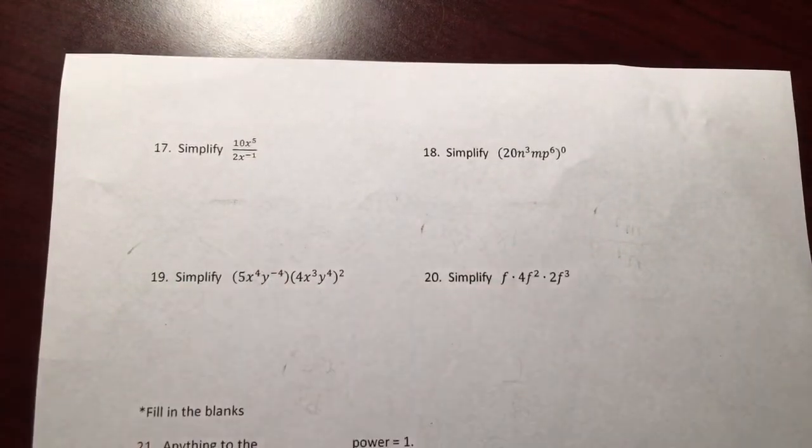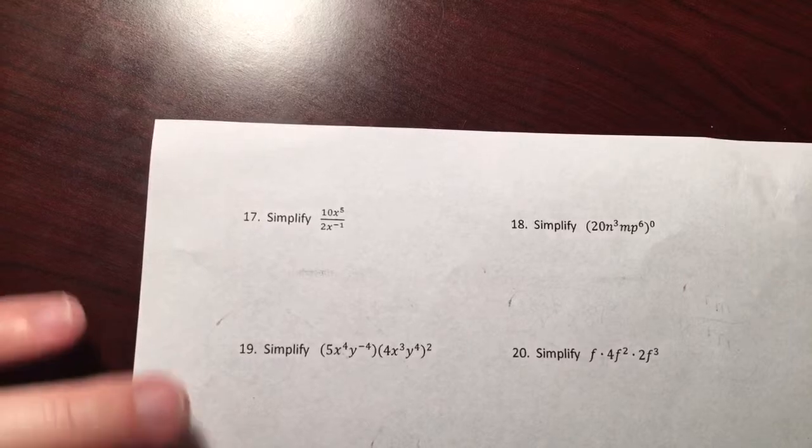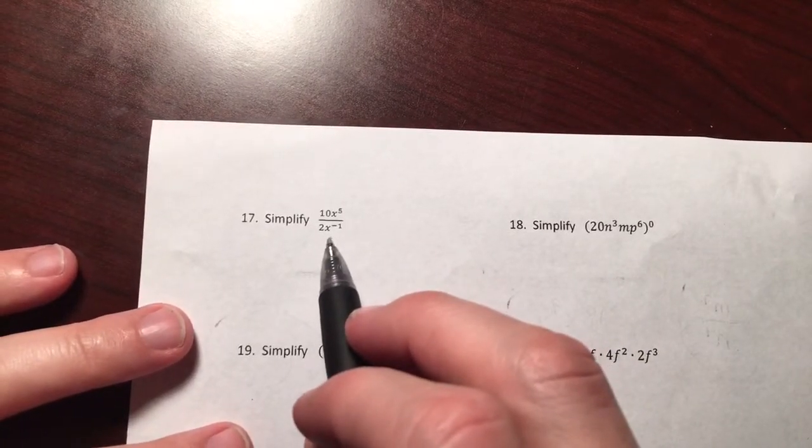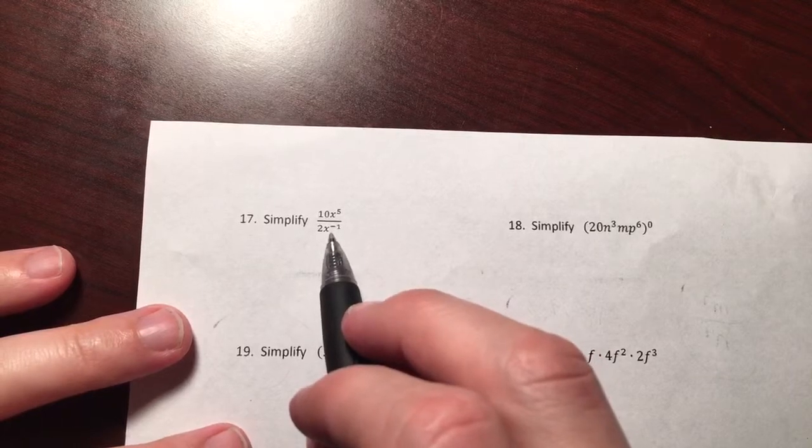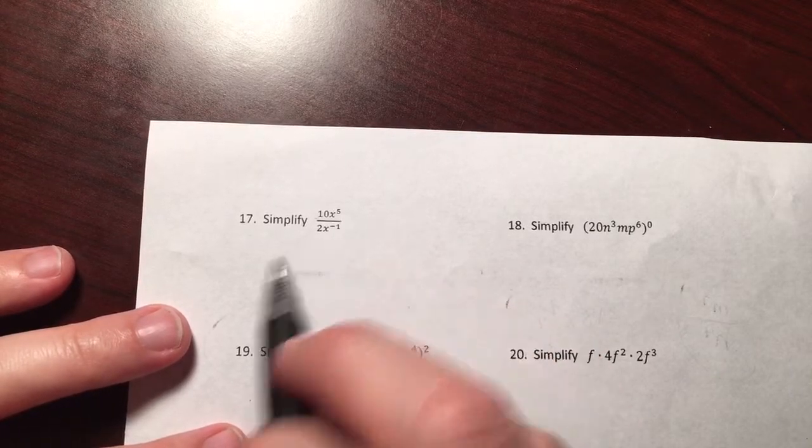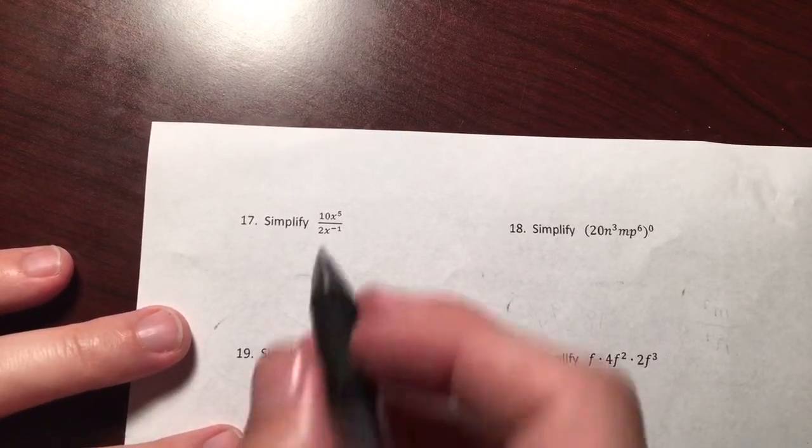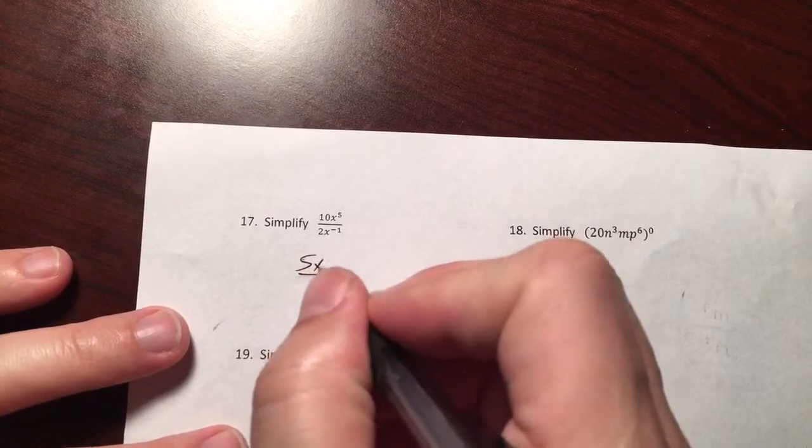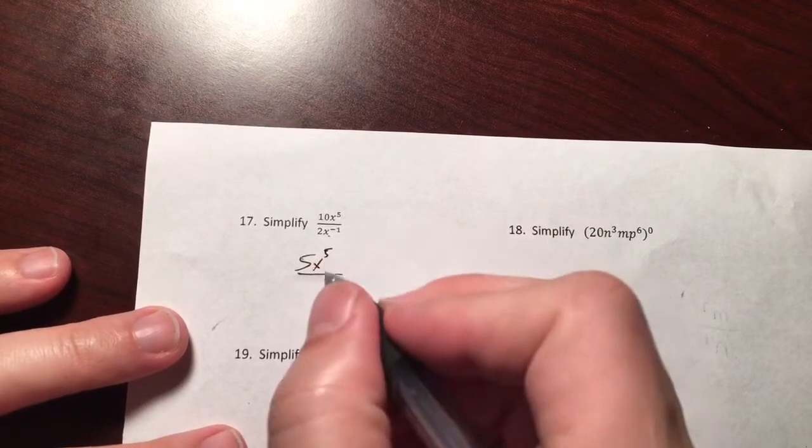I'm going to knock out these four problems real quick. Starting with 17: no power to a power, no zero power, but you do have a negative power that needs to be moved. But first, knock out your coefficients. 10 divided by 2 is 5. You have x to the fifth, and you move up your negative power.